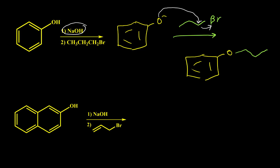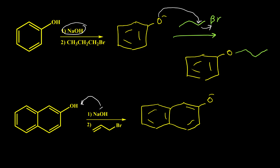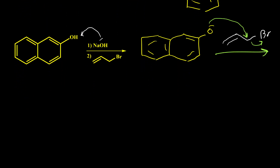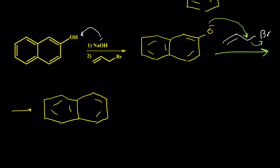In the second example we have a phenol derivative — whenever we have OH attached to a benzene ring it is a phenol, regardless of the rest of the structure. This phenol is beta-naphthol. Hydroxide easily takes the hydrogen from the phenol, giving the beta-naphthoxide anion. This anion then reacts with allyl bromide: O-negative attacks and expels bromide, giving us the allyl ether as the final product.